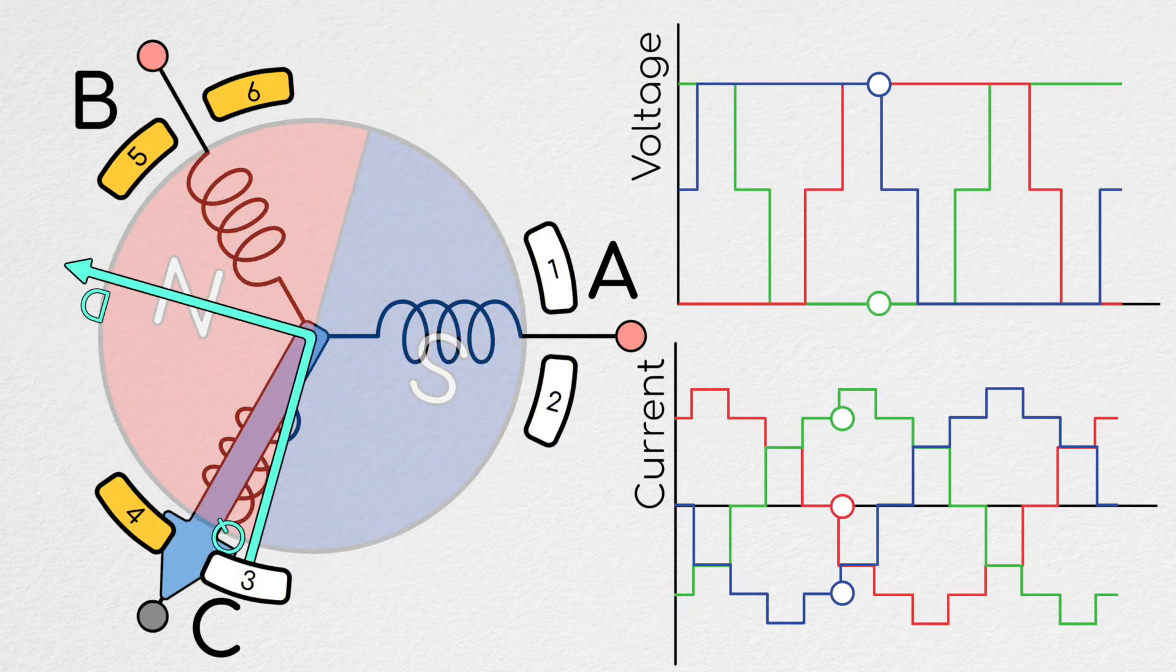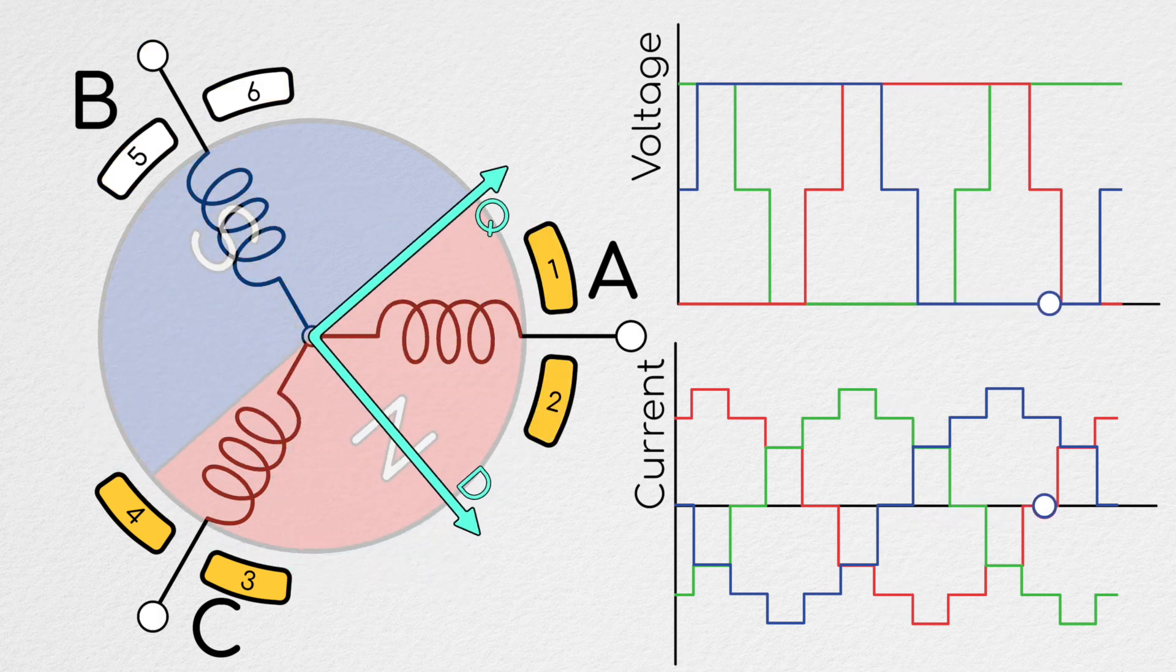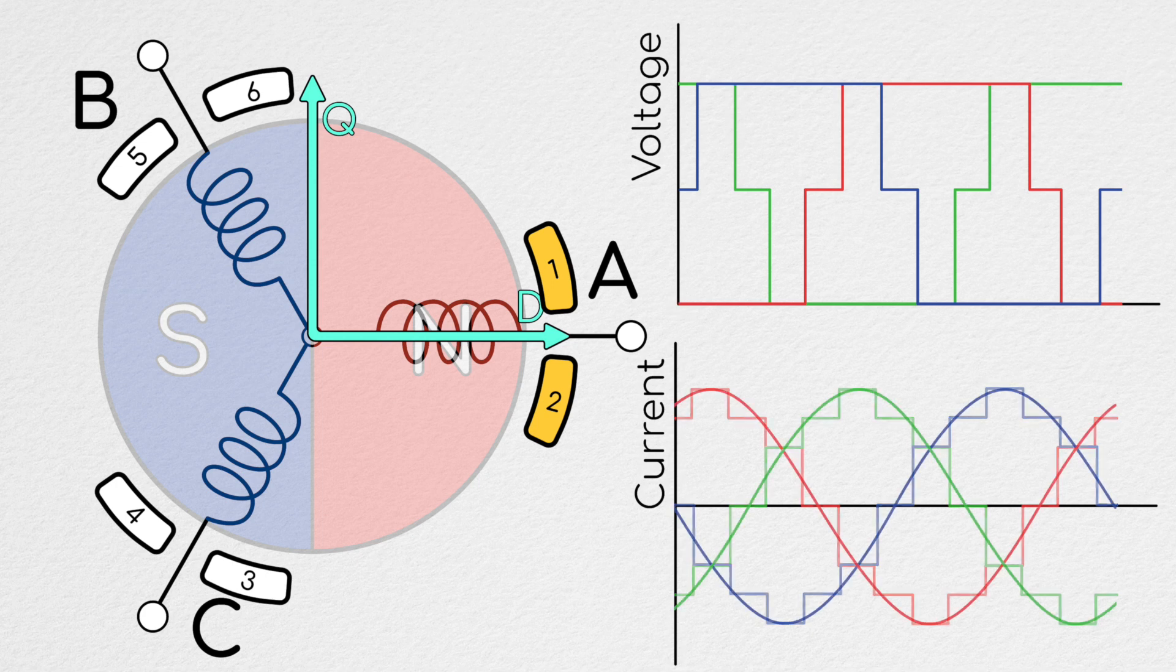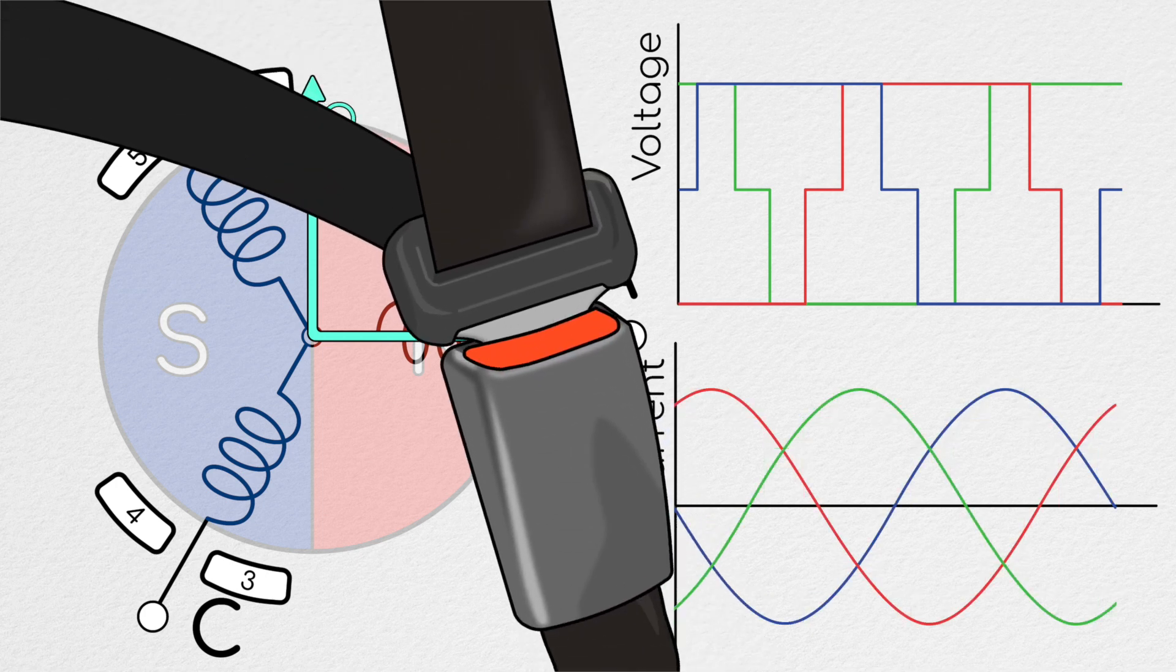So what would happen if instead of running these currents which look like low resolution kind of wonky sine waves through our system, we actually just ran three sine waves? Well, buckle up, because it's time for some math.